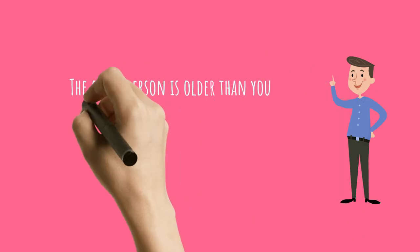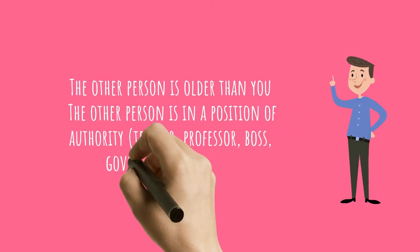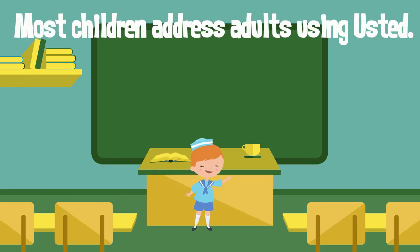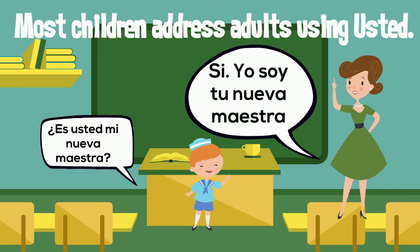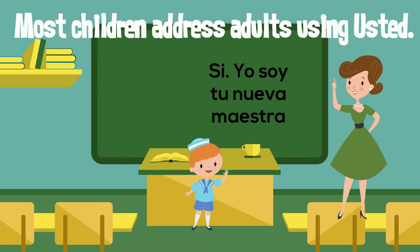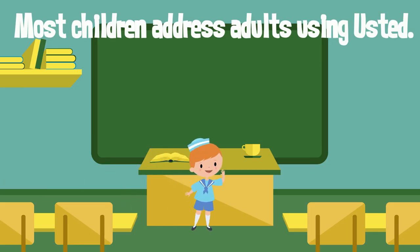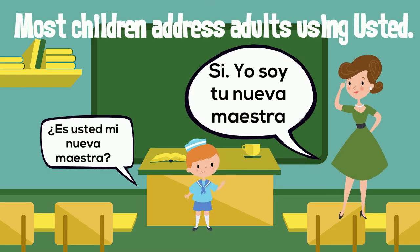Let's recap. If the other person is older than you or in a position of authority — such as a teacher, principal, boss, or government officer — you would refer to them as usted: formal, polite, respectful. Most children address adults using usted. For example: '¿Es usted mi nueva maestra?' — 'Sí, yo soy tu nueva maestra.' The kid uses usted when talking to the adult.